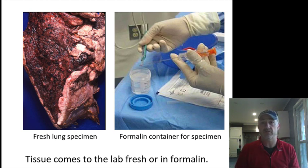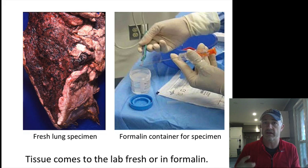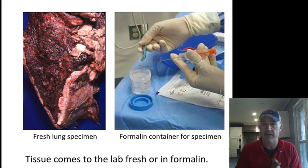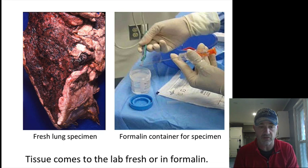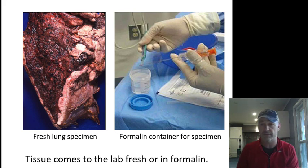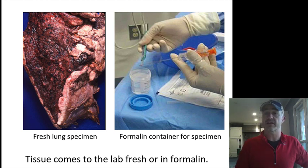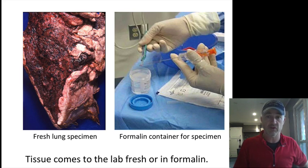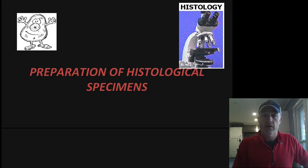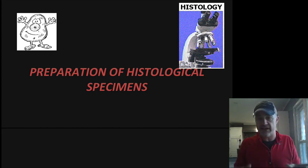One of the big things with making a tissue slide is that these were living tissues. Because of that, they are prone to degradation, so we need to make it so they won't break down. That requires doing a number of different things. Generally, you're going to get these tissues either fresh or preserved in formalin. Formalin is a diluted form of formaldehyde, and that is what we refer to as a fixative — something that prevents degradation.